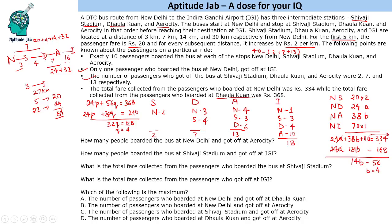Now we can answer the questions. The first question: how many people boarded at New Delhi and got off at Aero City? We already calculated this — the answer is 4 people. Second question: how many people boarded at Shivaji Stadium and got off at IGI? Shivaji Stadium to IGI is 3 people.